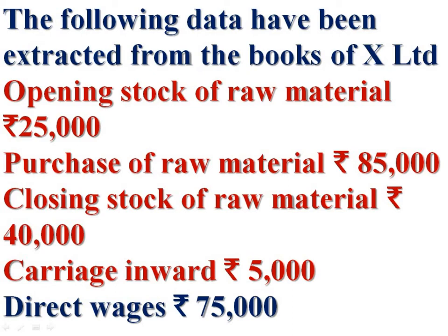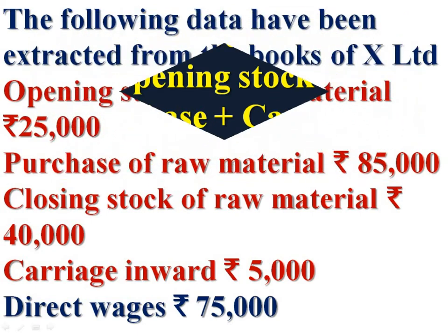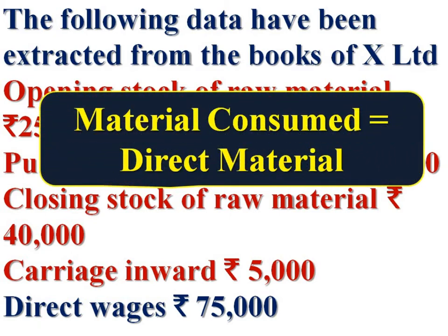Opening stock of raw material, purchase of raw material, closing stock of raw material, and carriage inward — these items are given to find out material consumed. Material consumed is equal to opening stock plus purchases plus carriage inward minus closing stock. Find the material consumed; that material consumed is the direct material forming part of prime cost.